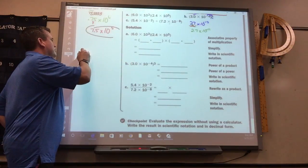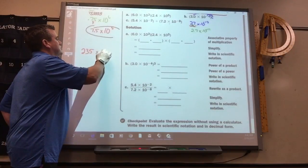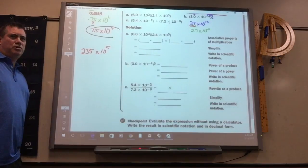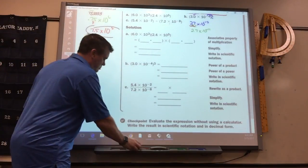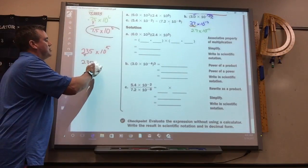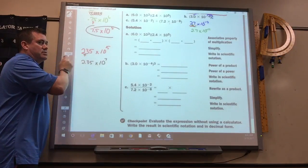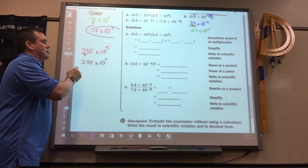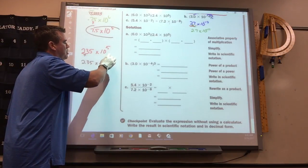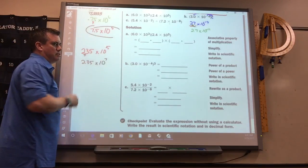So, if you had 235 times 10 to the 5th for your answer, it would be 2.35 times 10 to the 7th, because I had to move it 2 spots. Because, originally, 5 means I'd move it 5 spots to the right, but if I put the decimal here, I'd have to now move it 7 to the right.